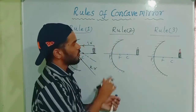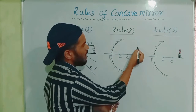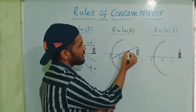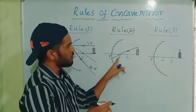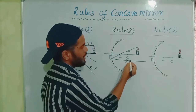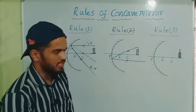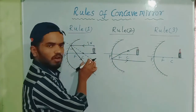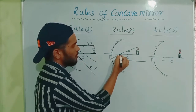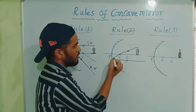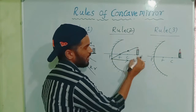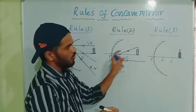Rule 2: We need to take the light ray which passes through focus. The ray which is passing through focus, after reflection, it travels parallel to the principal axis. It is the converse of Rule 1. The ray which passes through focus, after reflection, it travels parallel to the principal axis.